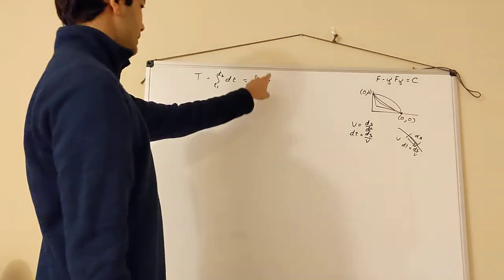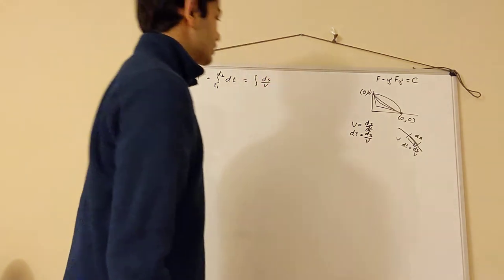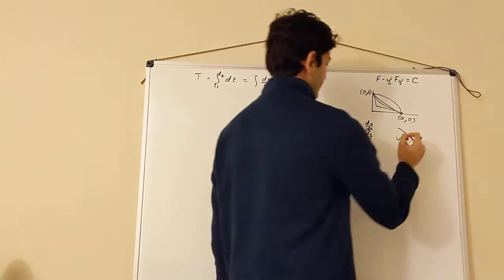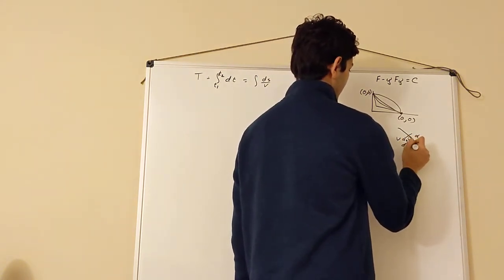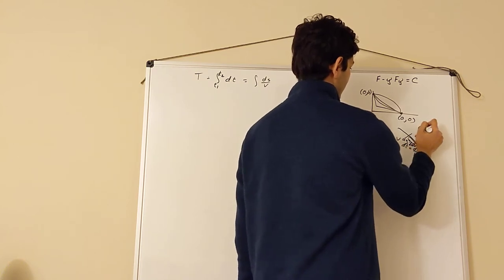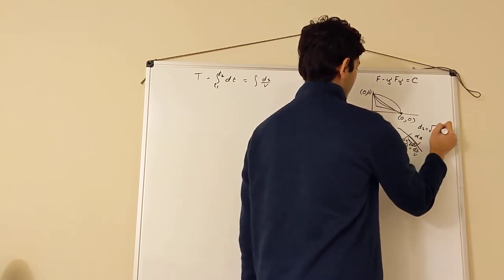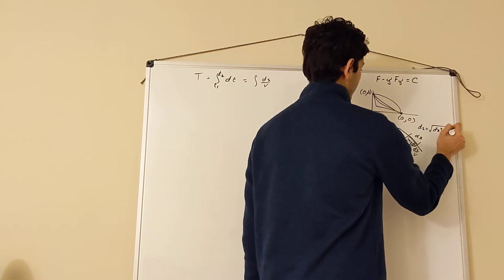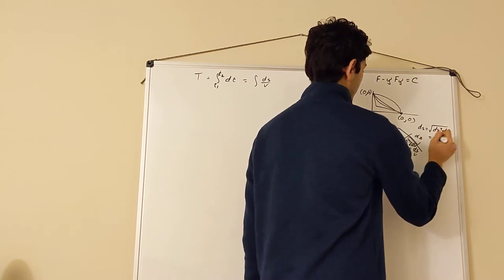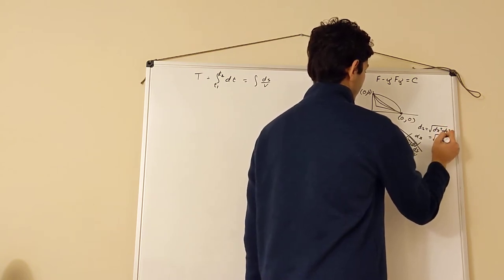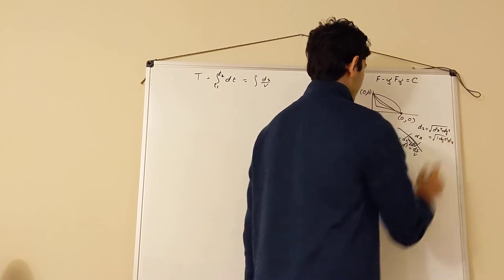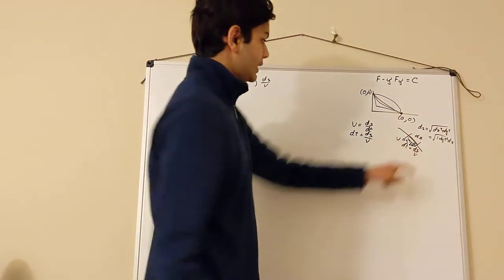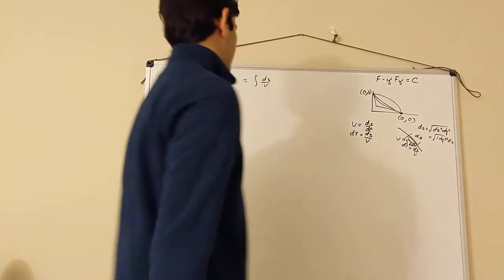So we can rewrite the functional as the integral of ds/v. Now we need to figure out what ds is and what v is. As usual, you can parametrize by setting the vertical component as dy and the horizontal as dx. Then ds equals the square root of dx² + dy², which equals the square root of (1 + y'²) dx — just using the Pythagorean theorem with horizontal and vertical components.